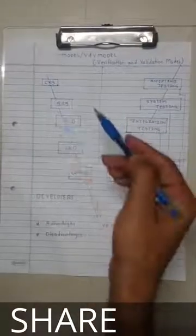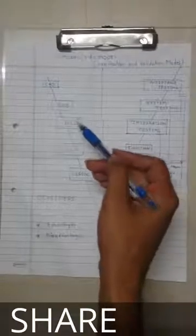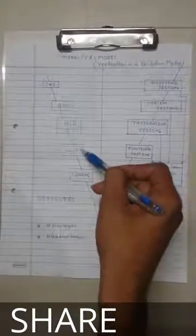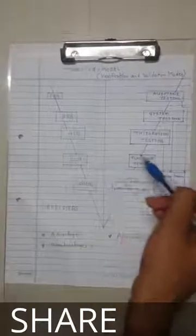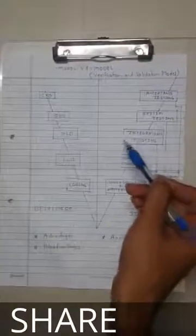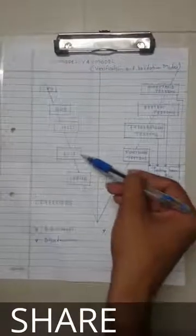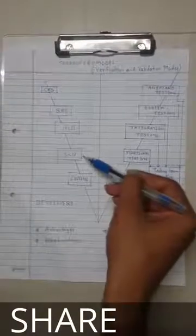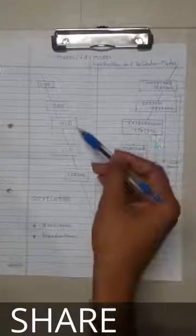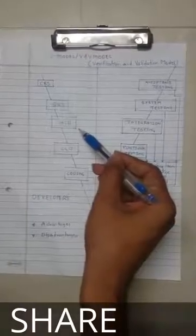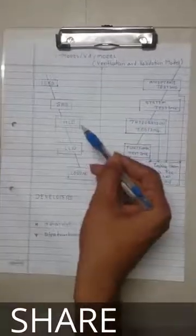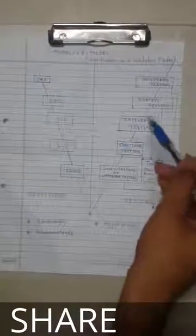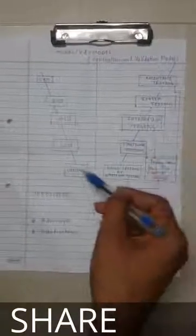In the third stage, developers start building the Low Level Design of the project. While developers are designing the Low Level Design, the testing team is testing the High Level Design. The testing team reviews the HLD and writes the integration test plan and integration test cases.